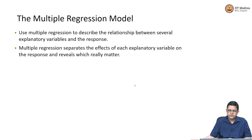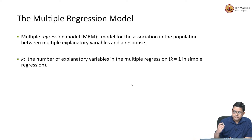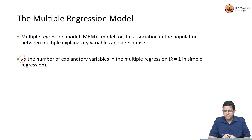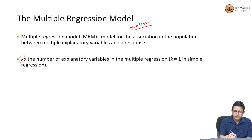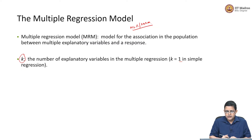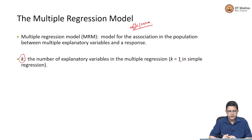As we had seen the expression for simple linear regression, let us extend that. Now we will have k such explanatory variables — k was 1 in the simple linear regression model. We can call it MLR or MRM, multiple linear regression or multiple regression model. We are going to focus only on linear regression so that we can draw out those insights.